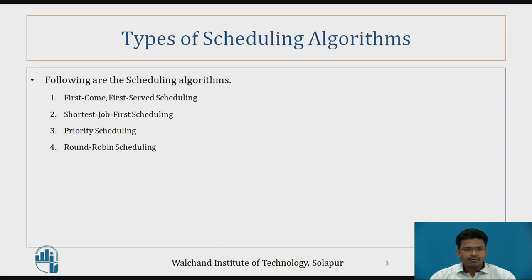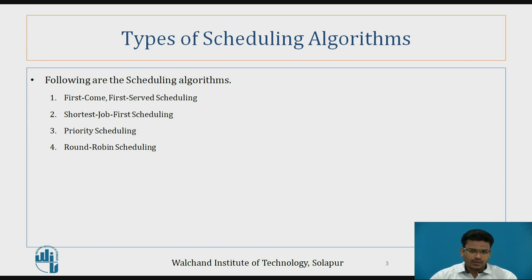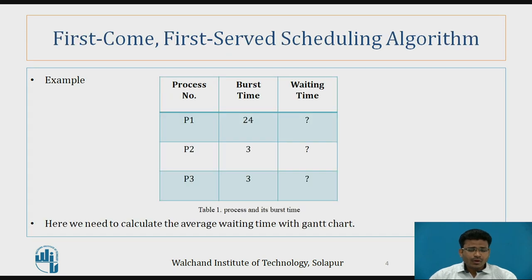First is the First Come First Served (FCFS) scheduling algorithm. Second one is the Shortest Job First (SJF), then priority scheduling, and then last but not the least, the Round Robin scheduling. Let's see the first example on the FCFS scheduling algorithm.